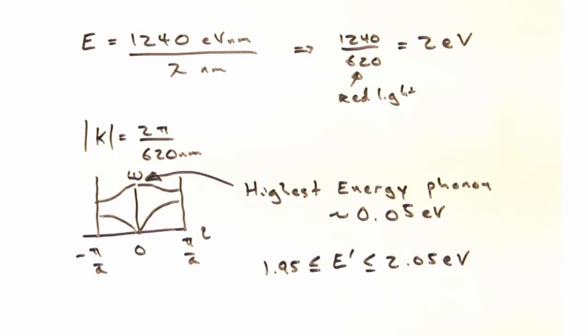which is to say the energy of the exit light that's been inelastically scattered, can vary from 1.95 up to 2.05 eV. And that's an upper bound because I'm invoking the highest energy phonon is either being created or absorbed.